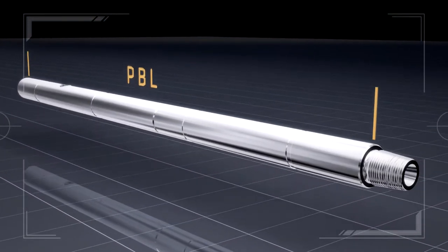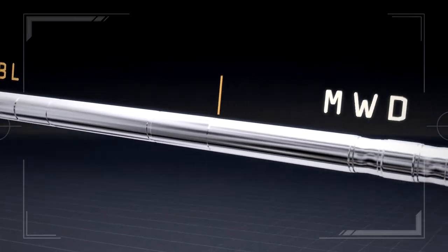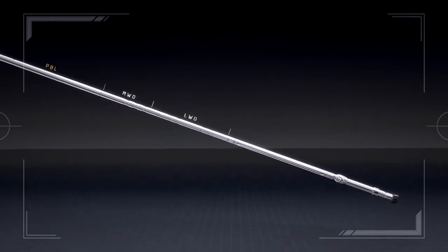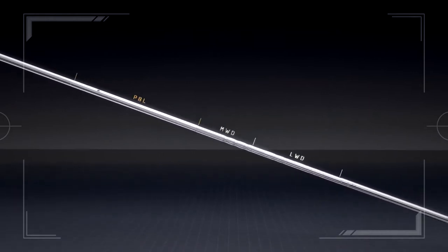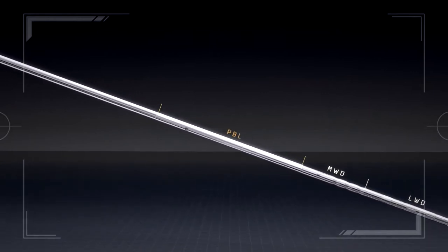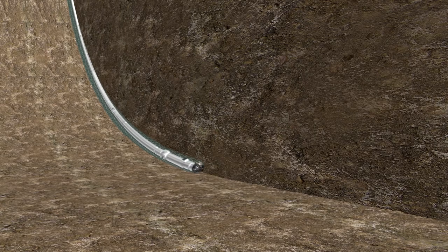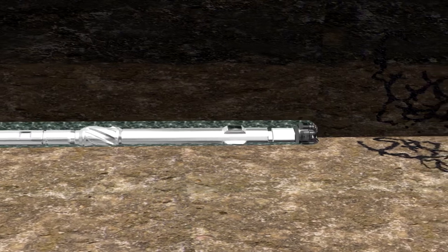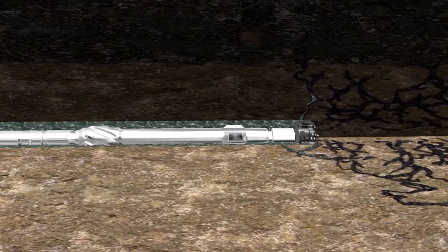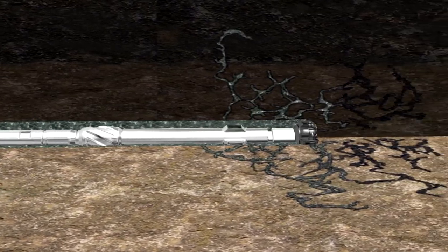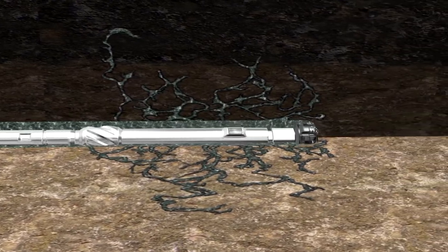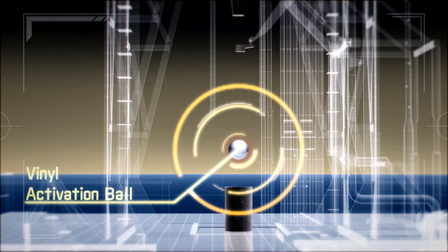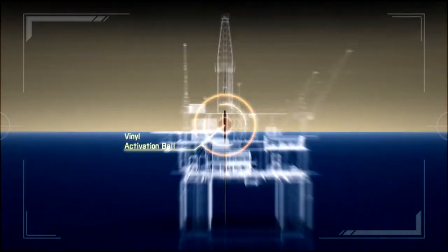The PBL tool is a component of the bottom hole assembly and is located above the MWD and LWD tools. While drilling ahead, if a lost circulation zone is encountered, the PBL tool can be activated. To activate the tool, a vinyl ball is inserted and pumped down.